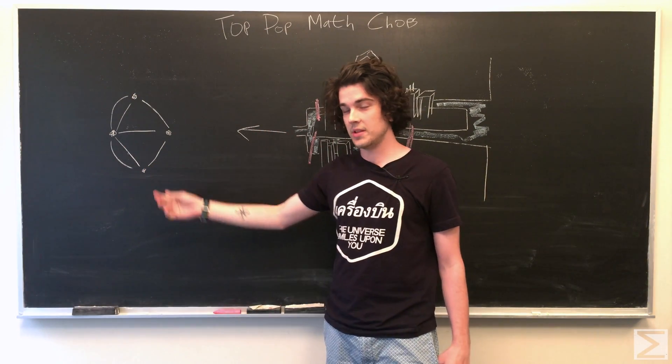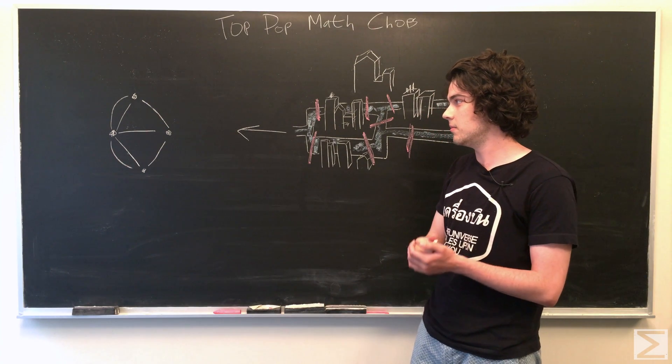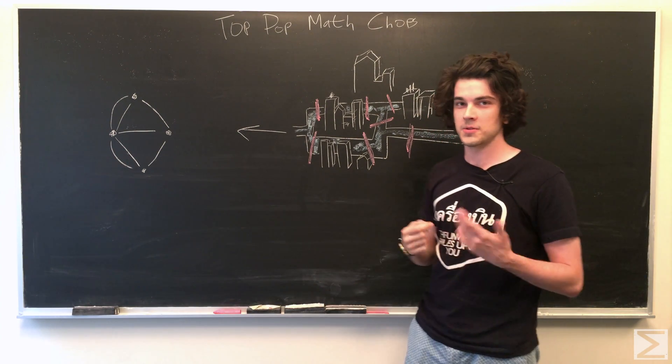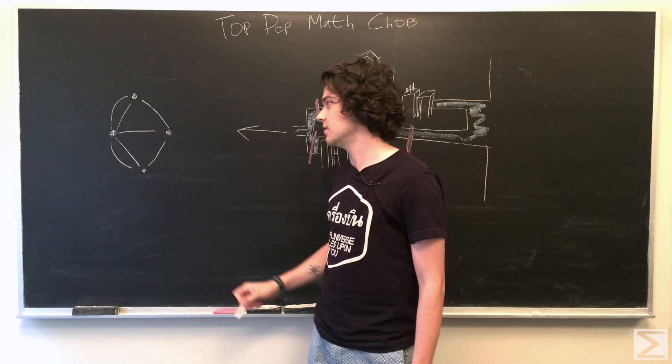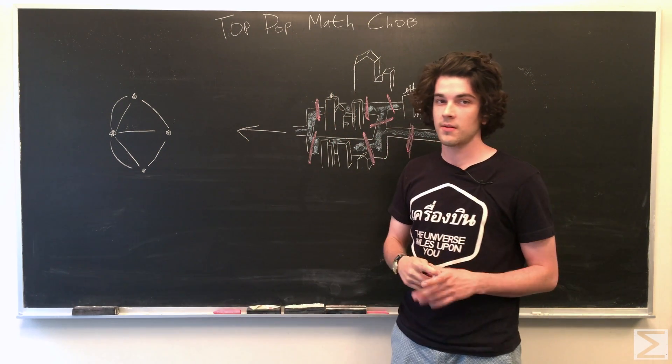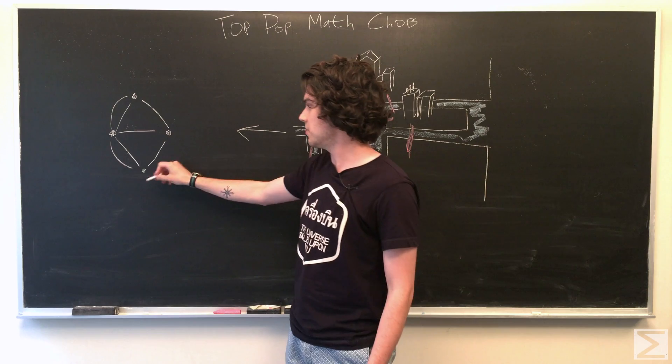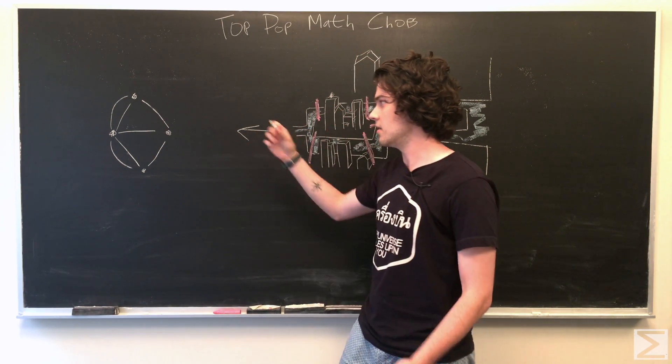And this is something like what he was thinking about when he was thinking about this problem: a set of points with lines connecting them. In graph theory we call these points vertices, and these lines edges.